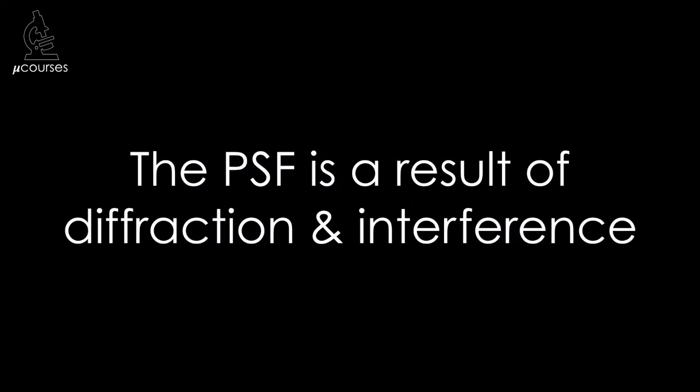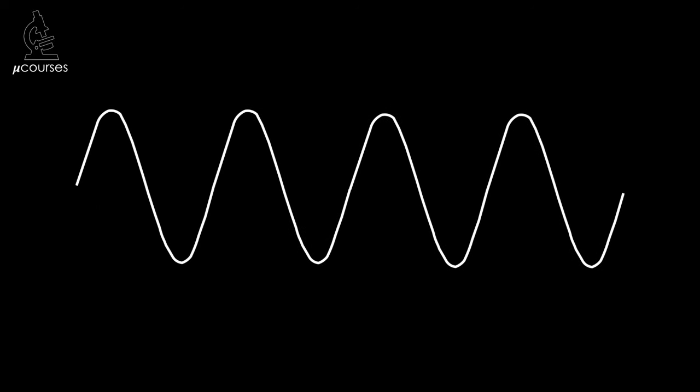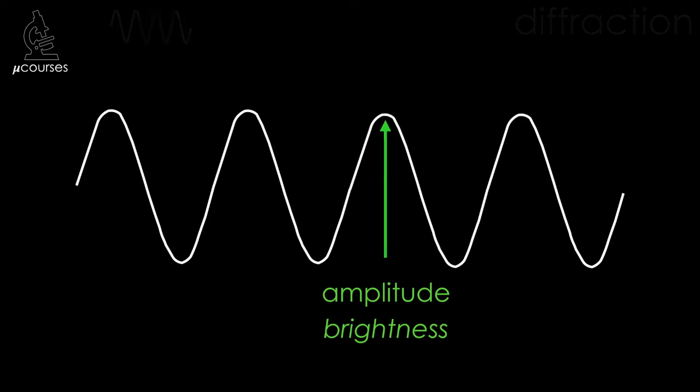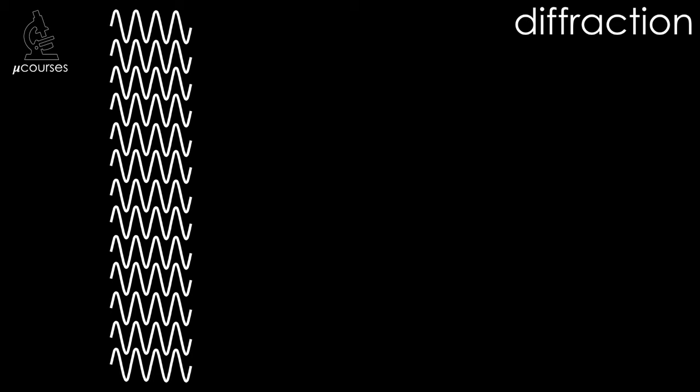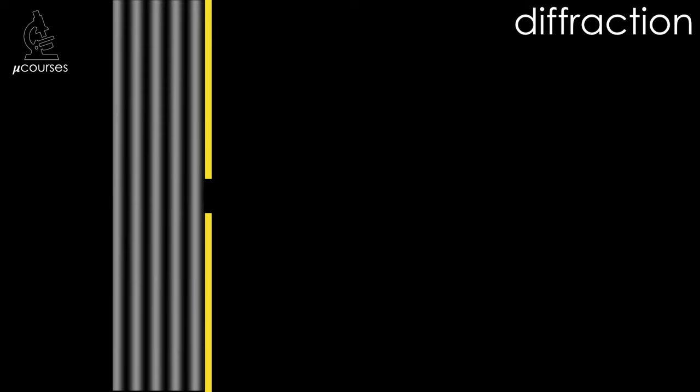So that's what the point spread function looks like — where does it come from? The point spread function is a result of diffraction and interference. Light propagates through space as a wave, and the amplitude of that wave determines the brightness. When thinking about diffraction, it's useful to imagine not just one light wave, but a bunch of light waves that are lined up in what we call a wavefront. A wavefront is usually depicted by light and dark lines, which indicate the amplitude of the light waves. Diffraction is what occurs when the wavefront encounters a slit or an aperture.